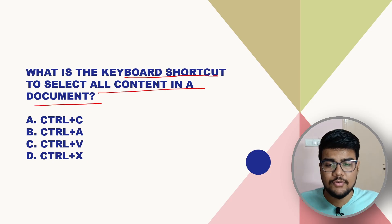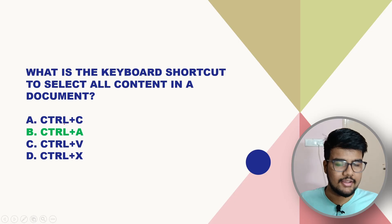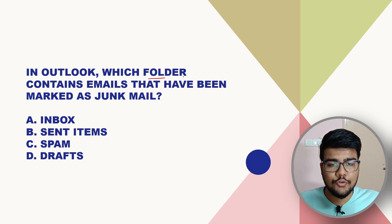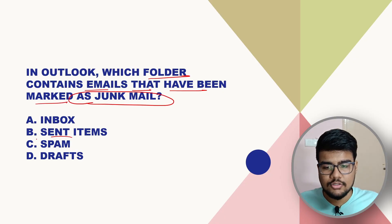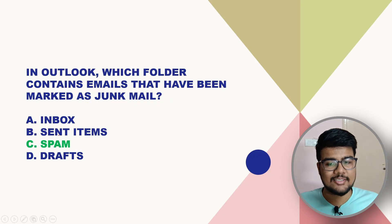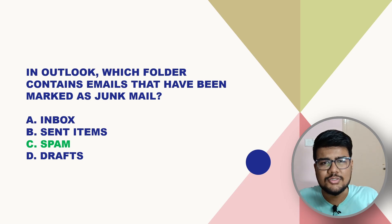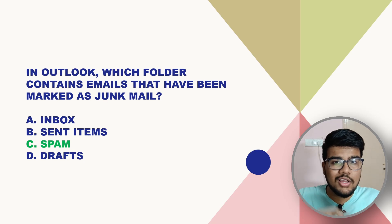What is the keyboard shortcut to select all content in a document? The answer is Ctrl+A. In Outlook, which folder contains emails that have been marked as junk? The answer is Spam — a few of these questions are straightforward, and you may have scored several correct answers in a row.